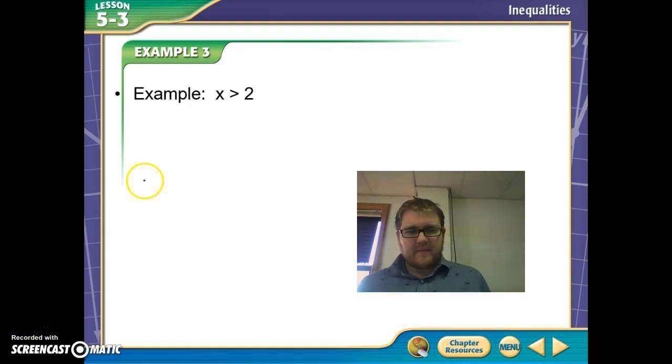Now let's look at how we would actually graph these inequalities to show all the possible values for X. For instance, if we said X is greater than 2 and we had a number line, before when we graphed numbers on number lines, we would just take and find the number it was equal to and put a dot here. But the problem is, in this case, if X is greater than 2, X can never equal 2.